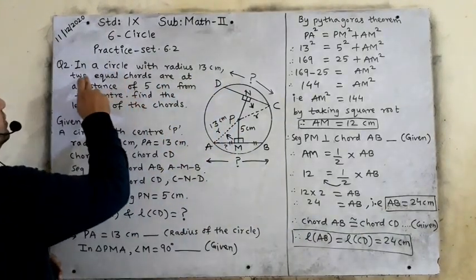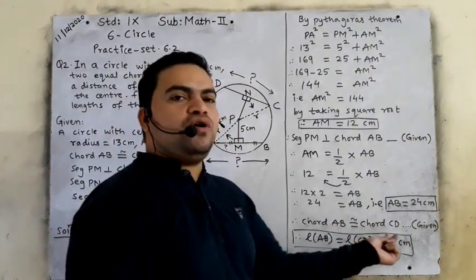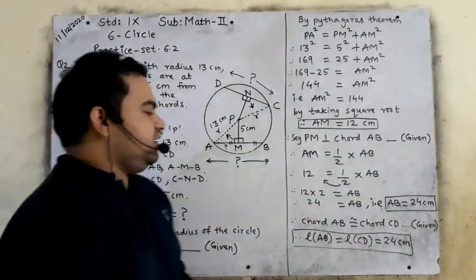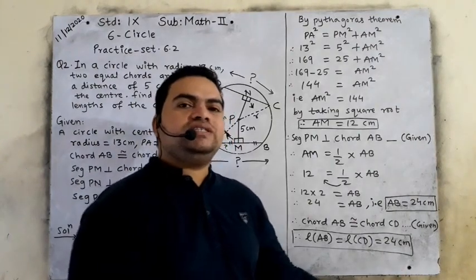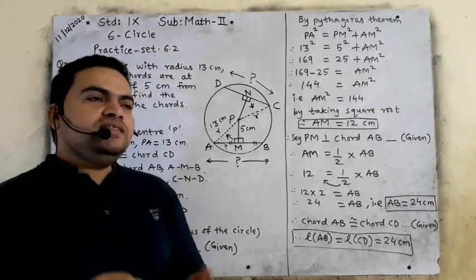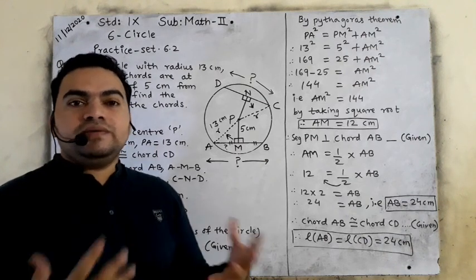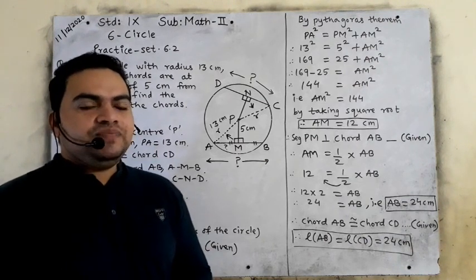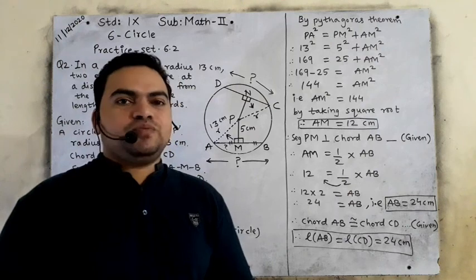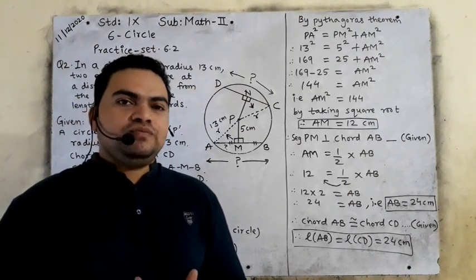Since chord AB is congruent to chord CD, the length of AB equals the length of CD equals 24 cm. Remember, in the circle chapter we utilize the Pythagoras theorem, which is the most usable theorem. We have finished practice set 6.2. Question number 3 is reduced from your syllabus for this year. Please practice. Thank you so much and best of luck.